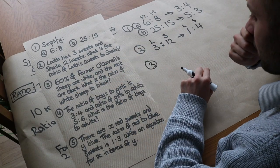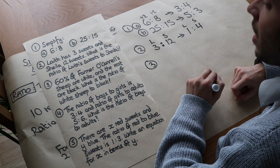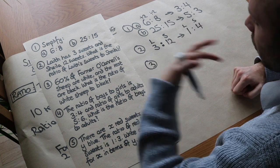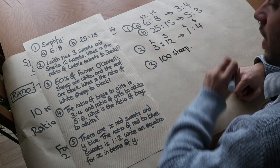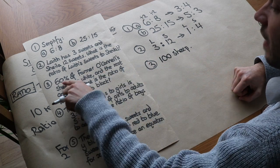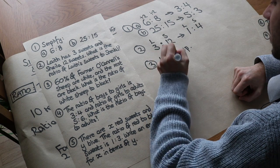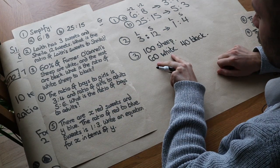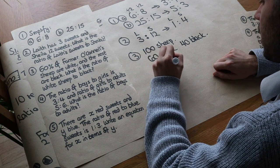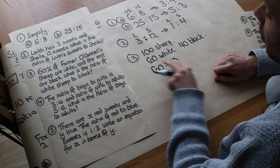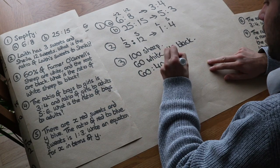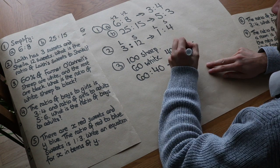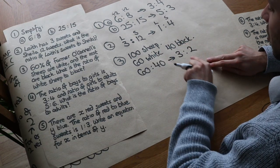60% of Farmer O'Connell's sheep are white and the rest — i.e. 40% — are black. What is the ratio of white sheep to black? It might help to think of an actual number of sheep. Let's say I have 100 sheep, because that makes finding a percentage easier. If 60% of the sheep are white, that means 60 are white and there must be 40 black. So the ratio of white to black is 60 to 40. I can divide these both by 20: 60 divided by 20 is 3, 40 divided by 20 is 2. So the ratio of white to black sheep is 3 to 2.